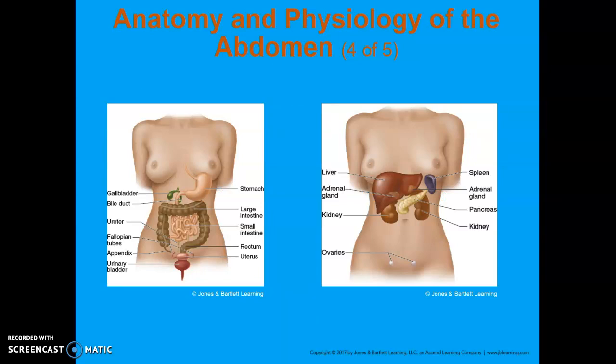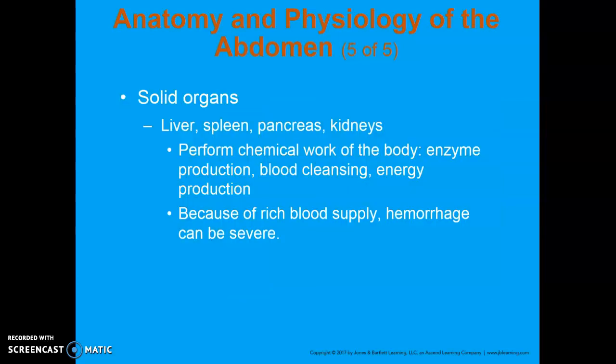The left graphic shows all of your hollow organs and the right shows all of your solid organs. Your solid organs include your liver, spleen, pancreas, and kidneys. A lot of these perform some sort of chemical work within the body — producing enzymes, cleaning out the blood, ATP production — but because they have a very rich blood supply, you can get some pretty severe hemorrhage with them.